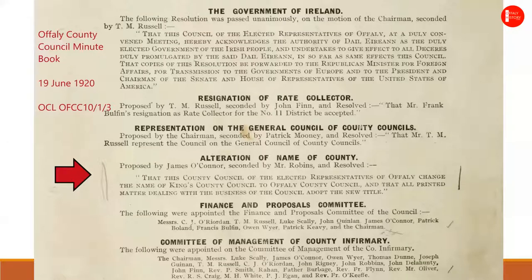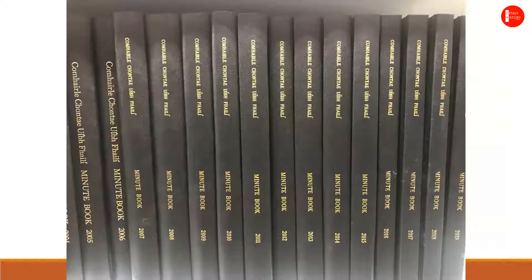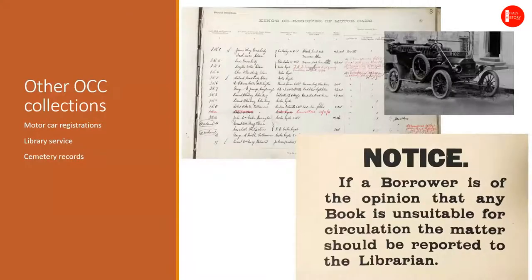Following the local elections in 1920 and in the middle of the War of Independence, Sinn Féin councillors swept the boards and ushered in a new era of local government. One of the first actions the council decided on was to change the name of the council itself, and from this date it was known as Offaly County Council. Minute books of Offaly County Council are transferred to the archives regularly so that future generations will be able to look back on the decisions made by councillors today. Other interesting archives include the registrations of the earliest motor cars from registration number IR01 onwards, as well as records relating to the development of the library service, cemetery records and many more.